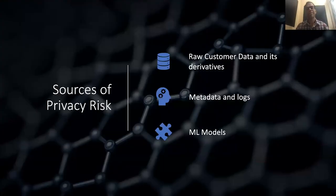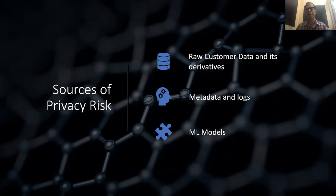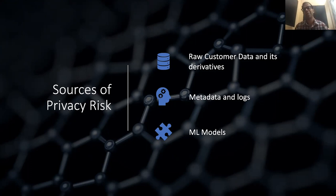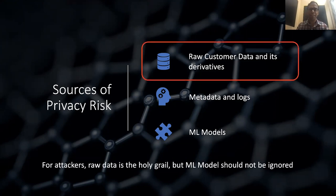What are the different sources of privacy risk within an organization? There are three big sources. First is the raw customer data and any of its derivatives being stored by the company. Second are the metadata and logs that could be joined with other data sets to identify the end user. And third are machine learning models — though unintuitive, they are a derivative of raw customer data and may retain characteristics that clever attackers can use to reconstruct the original data set. Of these three, raw customer data is the most important to protect, but machine learning models should not be ignored.